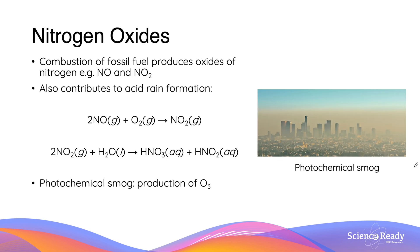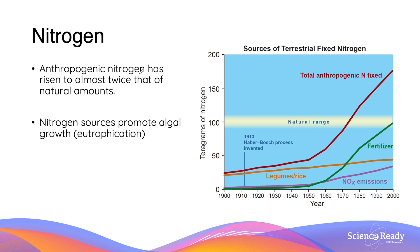Nitrogen is abundant in the atmosphere in the form of N2 gas, but it can be oxidized through combustion of fossil fuels to give us NO and NO2. Similar to sulfur dioxide, NO and NO2 produce acid rain, causing the same kind of damage to forests. But the main issue of oxides of nitrogen is that they are a major contributor to photochemical smog, which is a large-scale production of ozone and other closely related secondary pollutants. Anthropogenic nitrogen has risen to almost twice that of natural amounts, and an issue with that is that nitrogen is a source that promotes algal growth, also known as eutrophication, which we will talk about later on.